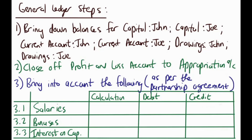One important point: if the partnership agreement says a partner receives say ten thousand rand a month as a salary, that amount isn't going to go into a salary account every month. It goes into the drawings account of that partner every month. At the end of the financial year we bring that into account. Whether it's bonuses or whatever, during the financial year it goes into the drawings account. At year end the accounts cancel out — for example, drawings of 120,000 and the salary account increases by 120,000, so they cancel out.